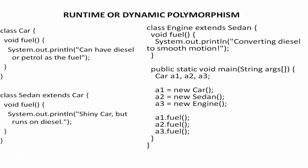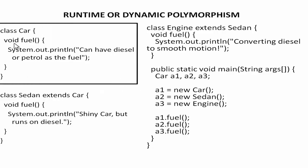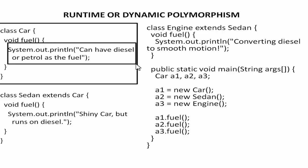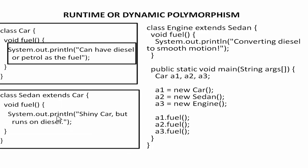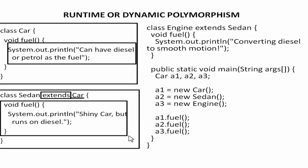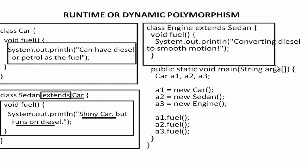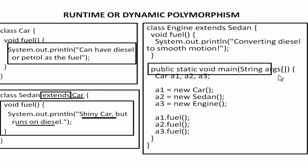Next is runtime polymorphism. Runtime polymorphism means variables are resolved during runtime. For example, we have 'class Car' with a method 'fuel()' that prints a value. Then 'class Sedan' extends Car using inheritance and also has a method called 'fuel()' that prints different text. The first text is 'Car can have diesel or petrol as fuel' and the second is 'Shiny car but runs on diesel'. A third class has the main method and also has a method named 'fuel'.